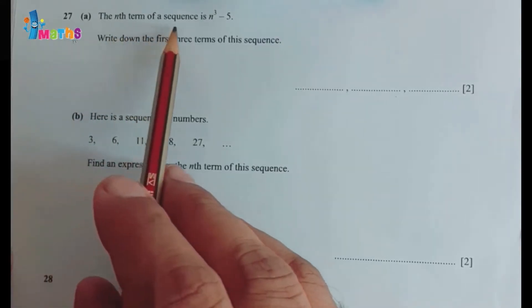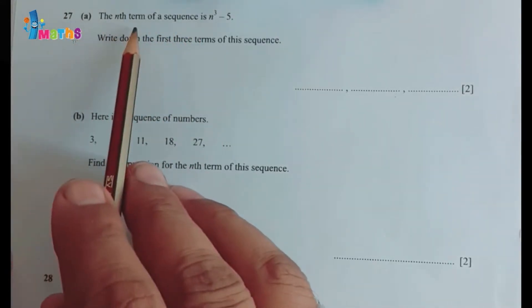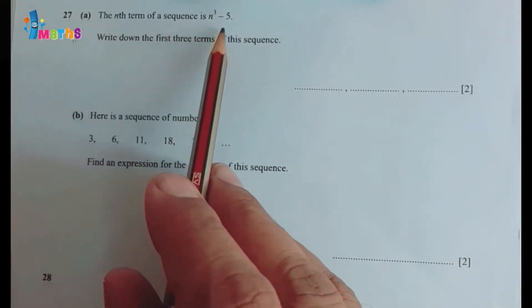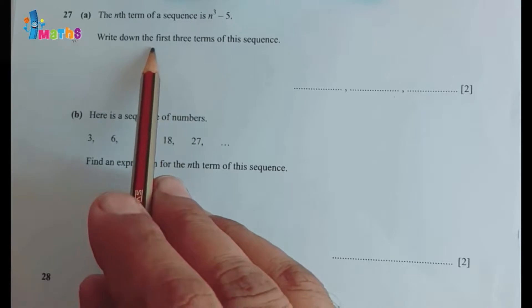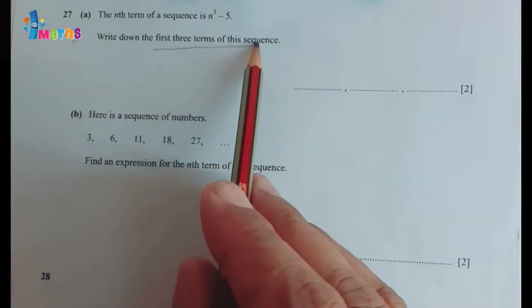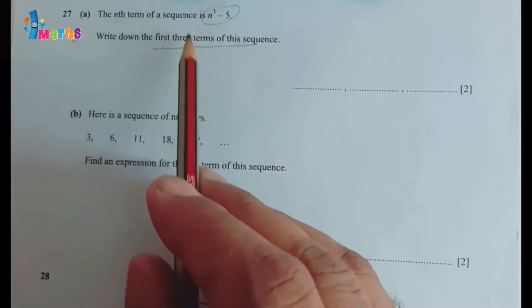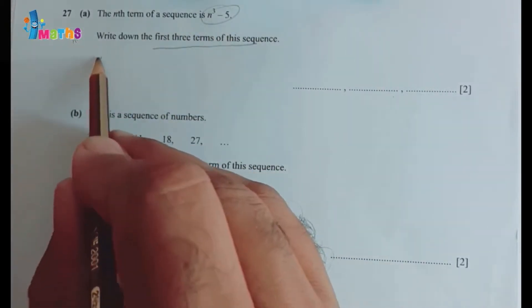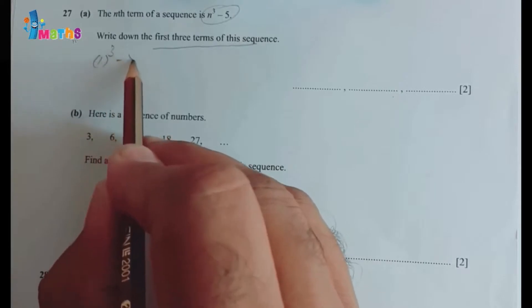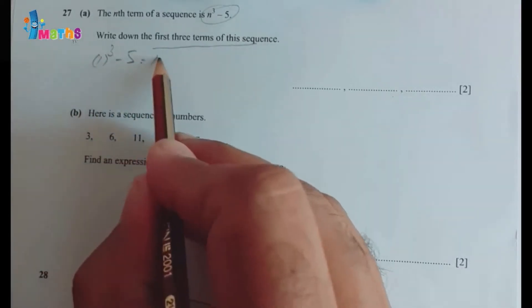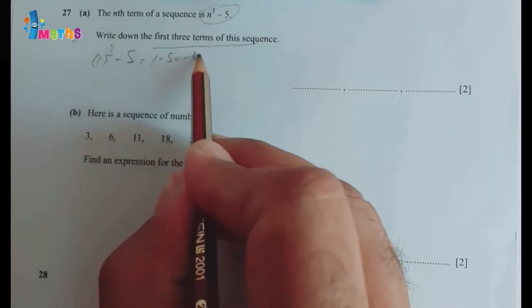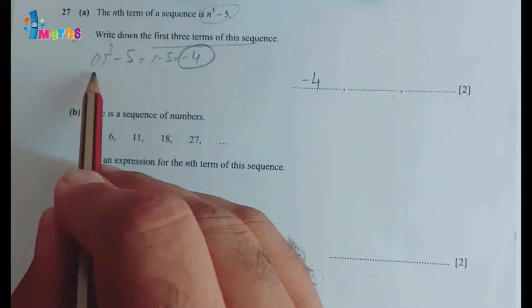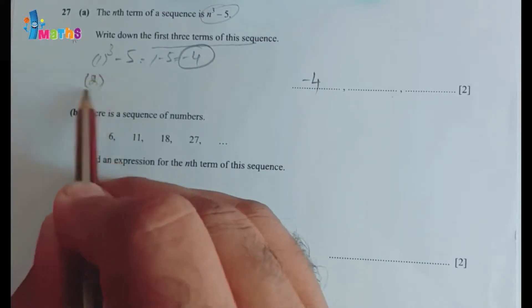Question number 27: the nth term of a sequence is n³ minus 5. Write down the first three terms of the sequence. We'll replace values in this one. We'll replace n equals 1, so 1³ minus 5 will equal 1 minus 5, which equals minus 4. So our first term will be minus 4.